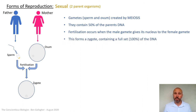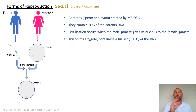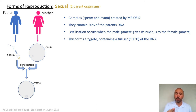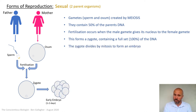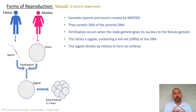The zygote is the very first cell that contains 100 percent of the DNA. You, at one point, were just a zygote — one cell, the only cell that's ever existed that was uniquely you. That zygote now needs to multiply by mitosis, and mitosis will form a little cluster of cells, which is an embryo.